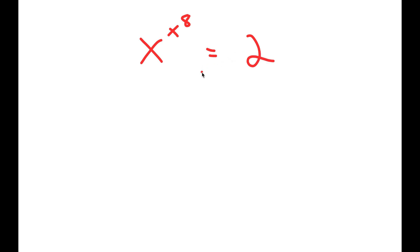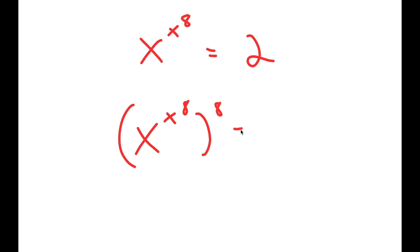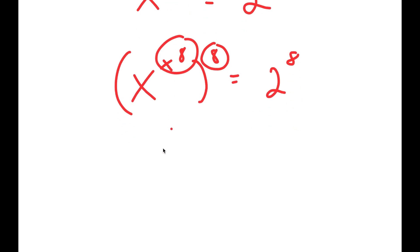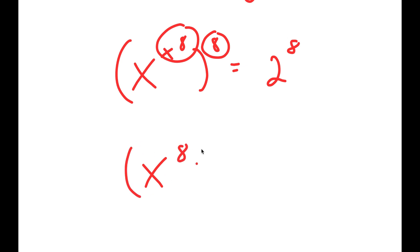I'm going to start by taking the power of 8 on both sides. So I get x to the power of x to the power of 8, to the power of 8, is equal to 2 to the power of 8. Now I'm going to switch the places of these two, so I get x to the power of 8 to the power of x to the power of 8, equal to 2 to the power of 8.